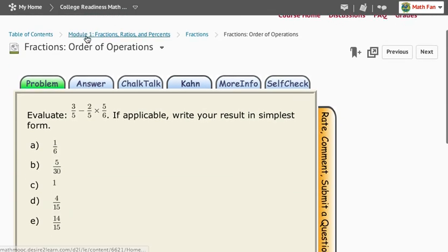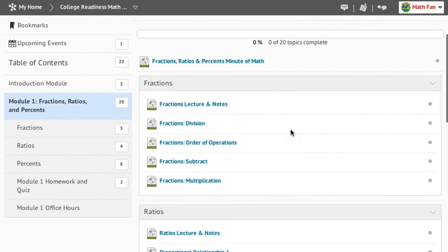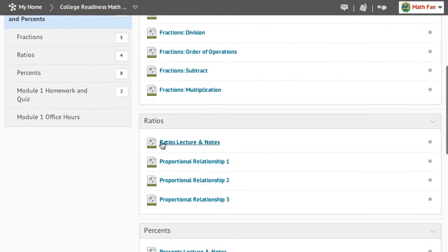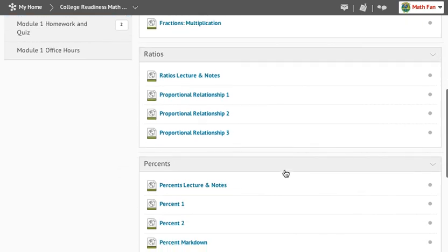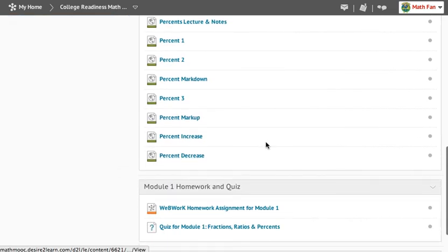Let's say, though, you want to go back into our Module 1. Go ahead and click up above, back into Module 1. This will take you to an outline of what you will see in the module. Again, the Minutes of Math are Fractions, Lecture, and Notes. One, two, three, four Learning Objects to go with that. Same thing under Ratios. We have Lecture and Notes with some Learning Objects, and Percent Lecture and Notes with some Learning Objects.